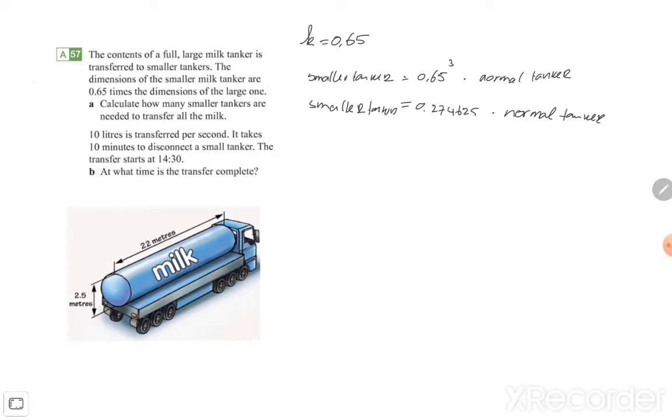A very important note, because they ask you to calculate how many smaller tankers are needed to transfer all the milk. So if we have the volume of the normal one and we just divide it with the smallest one, then we know how many times they need to transfer. What we can do is fill in a number for the normal tanker, because then we know the answer from the smaller tanker, and then fill it in as normal divided by small.